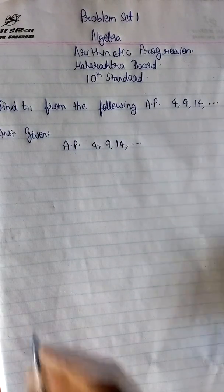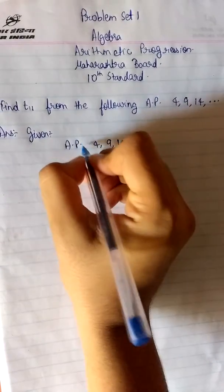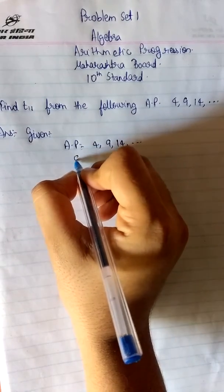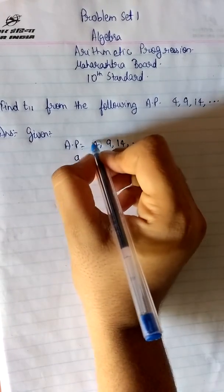So for any AP which is given to us by default we know two things from that AP. From that AP we know the first term. Now here the first term of the AP is 4.